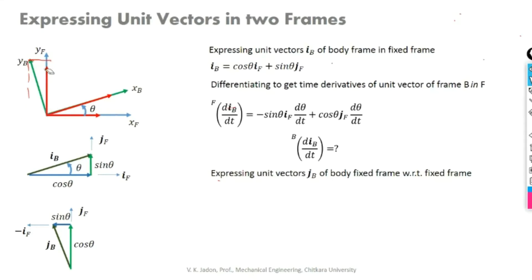Is there any doubt? Is it all clear? If JB is represented and we have a projection onto YF and a projection onto XF, those are what we mean by the components. This angle is theta, and that is why this component is cos theta and this one is sin theta.